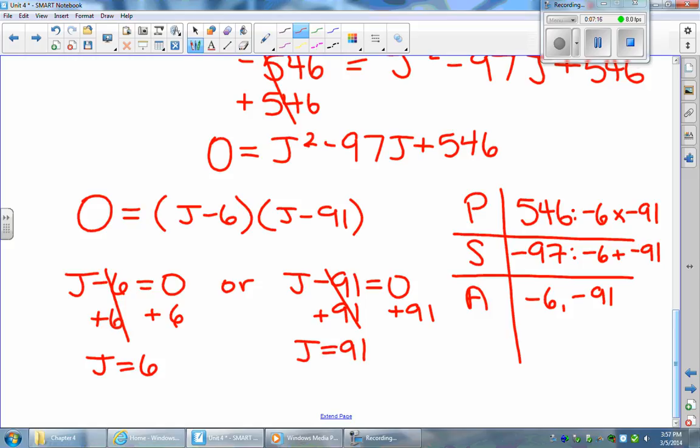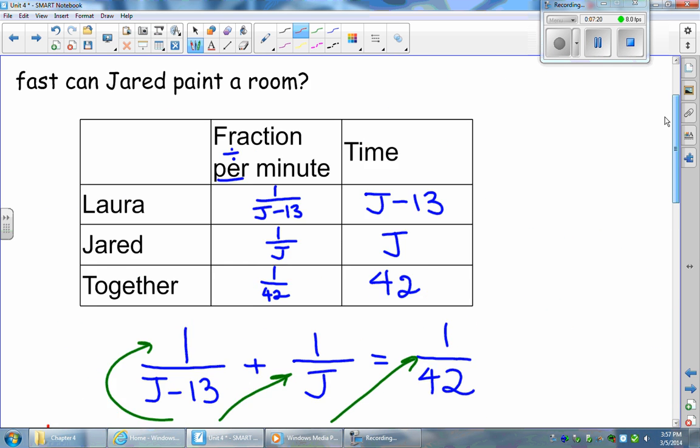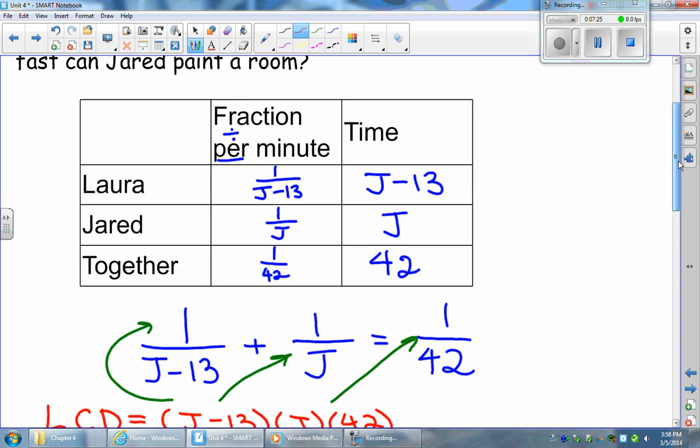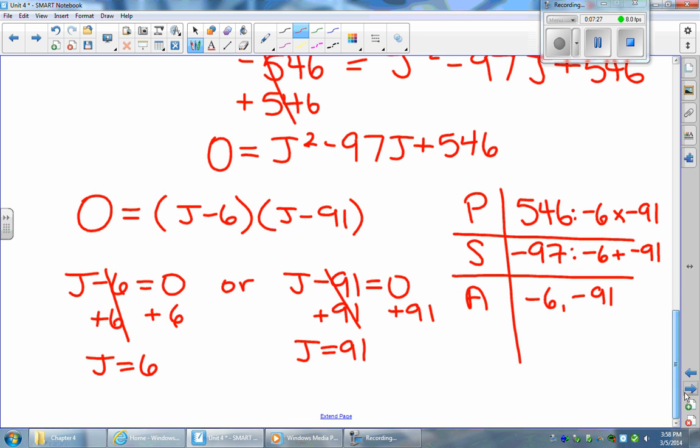Now one of these values does not make sense because we know that Laura paints the room 13 minutes faster than Jared. Therefore, if Jared's time is 6 minutes, that means that Laura is painting the room in negative 7 minutes and that doesn't make sense. So this would be an inadmissible value because it doesn't make sense in the context of the question.